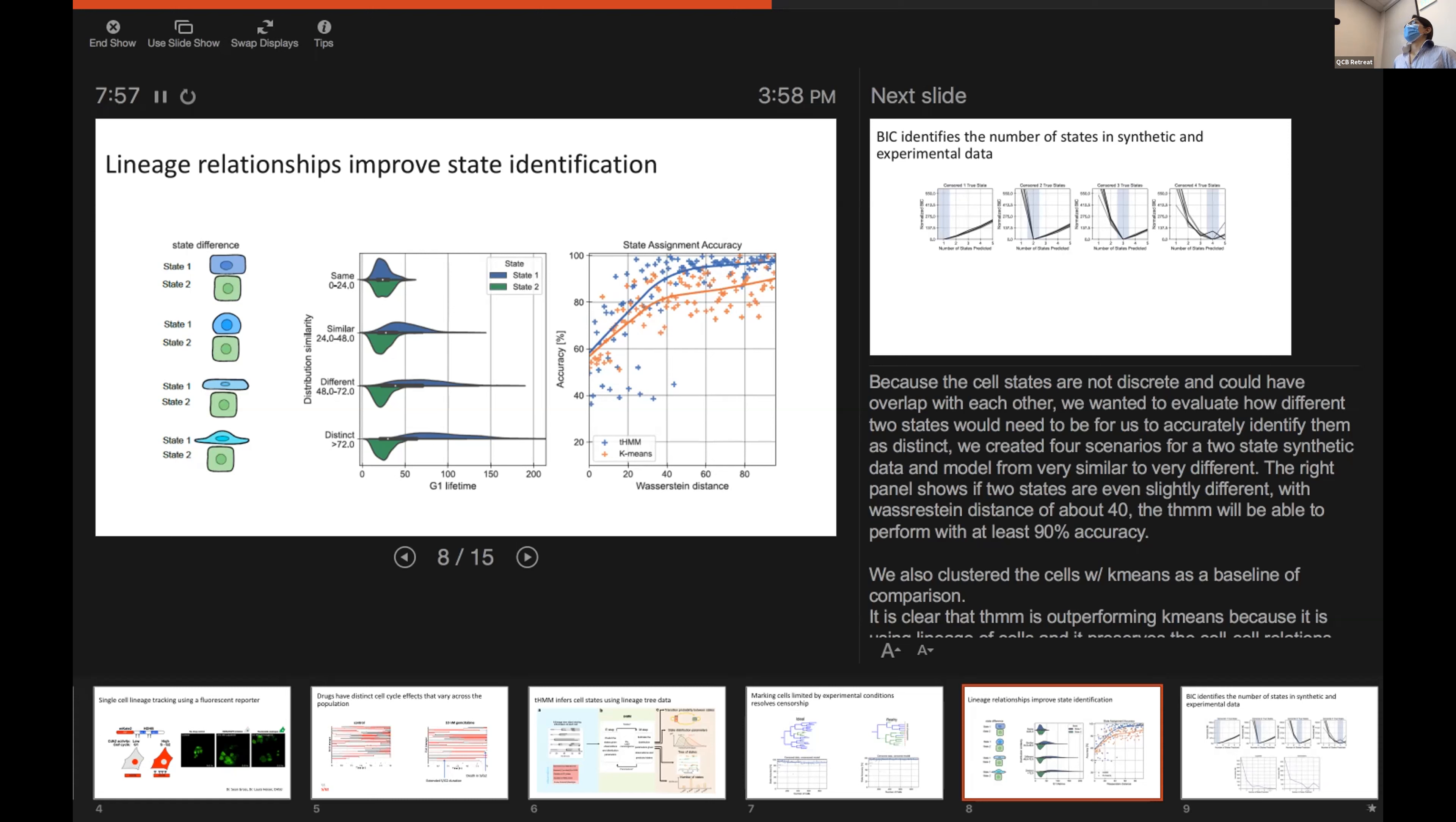We calculated the state assignment accuracy for these scenarios. We see that for Wasserstein distance of almost 40, which would be something like slightly different, we could have a state assignment accuracy of 90 percent or higher.